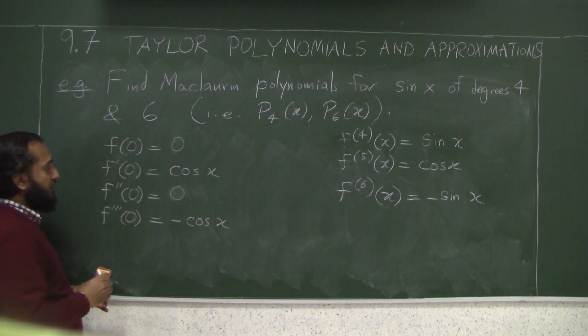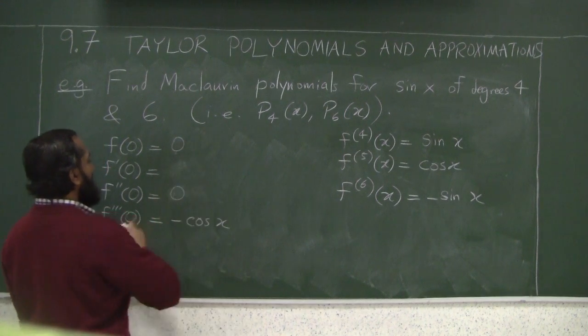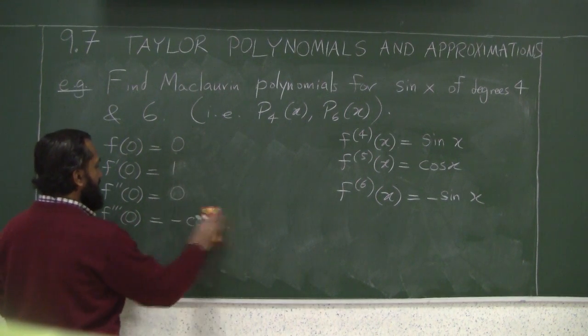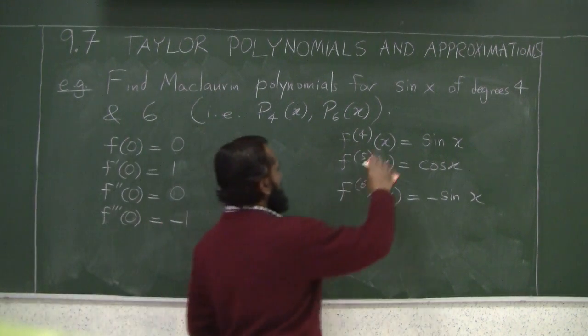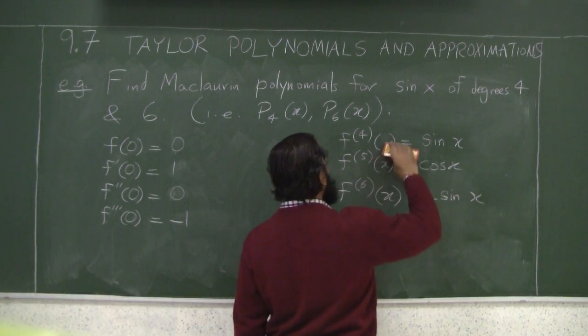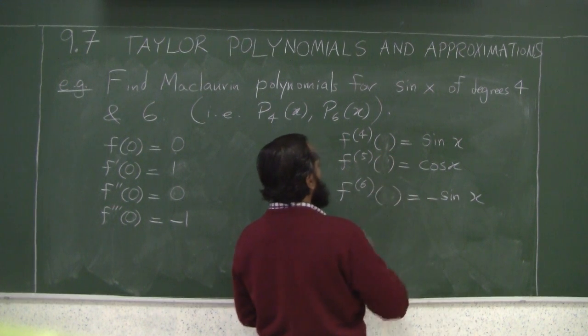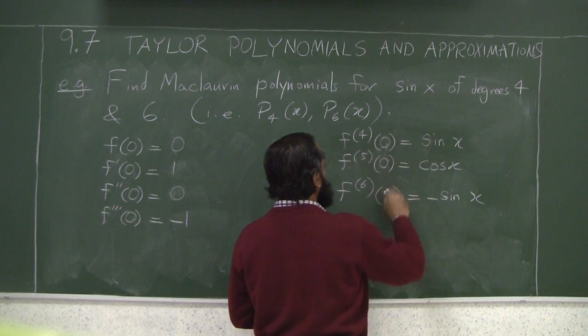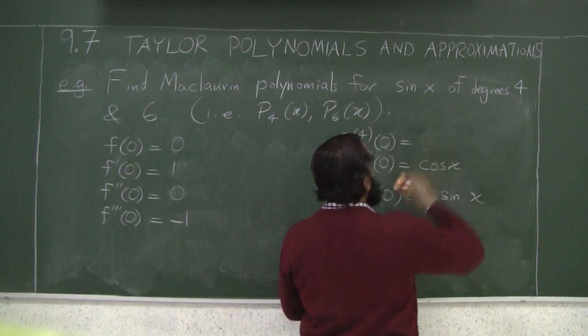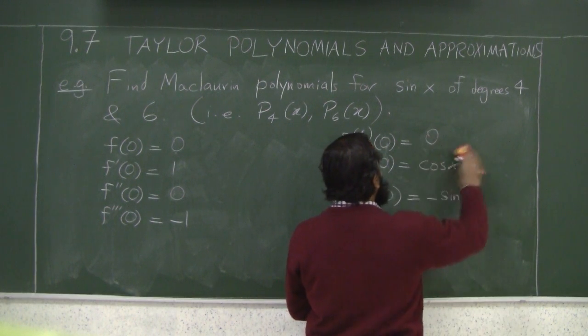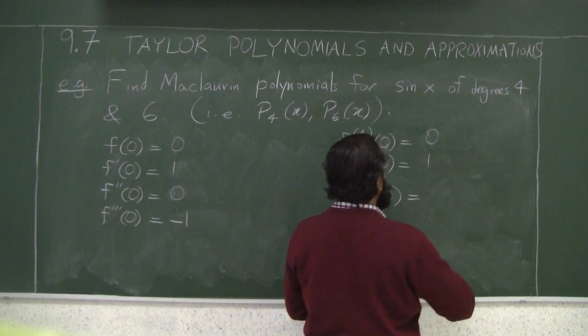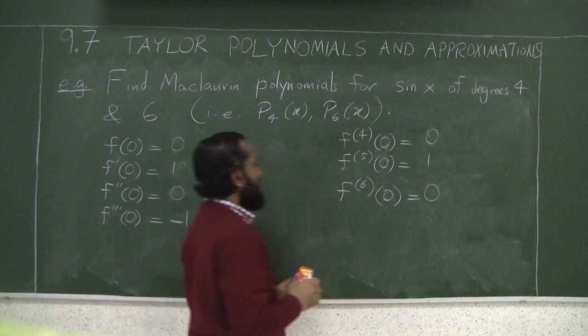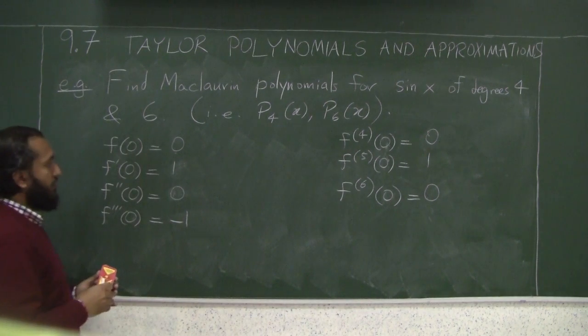And cosine of 0 is 1. So this is 1. This is negative 1. Do that for the other derivatives as well. So we have 0, 1, and 0.